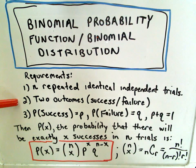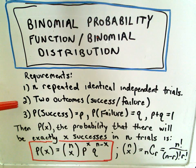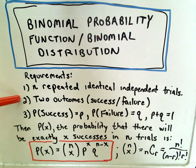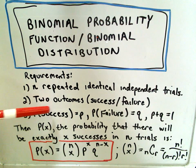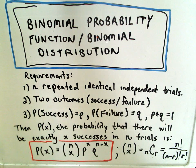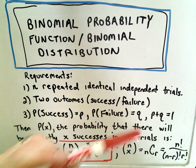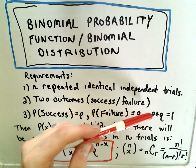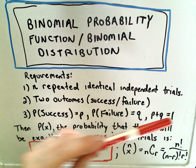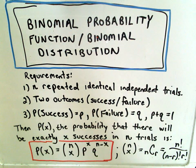There's only going to be two outcomes. Usually we'll consider one to be a success and the other to be a failure. So just notation, the probability of success we'll label with little p, the probability of failure will be q. Again, notice if you add up the probability of success plus the probability of failure, you get 1.